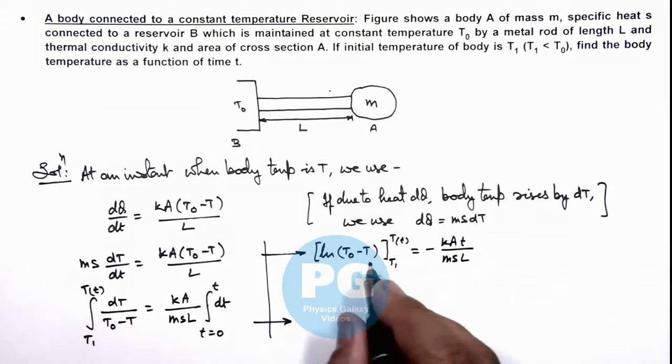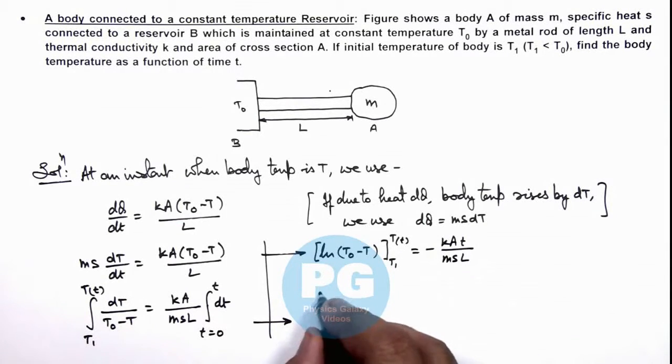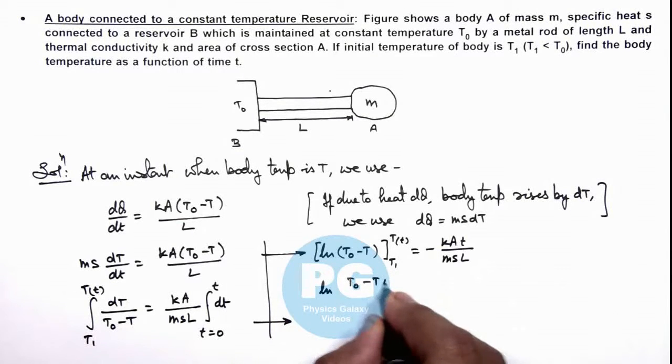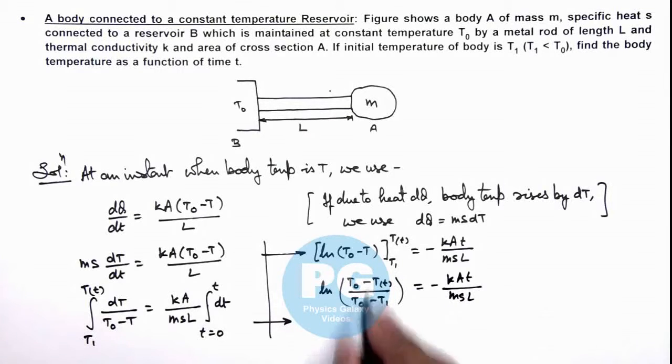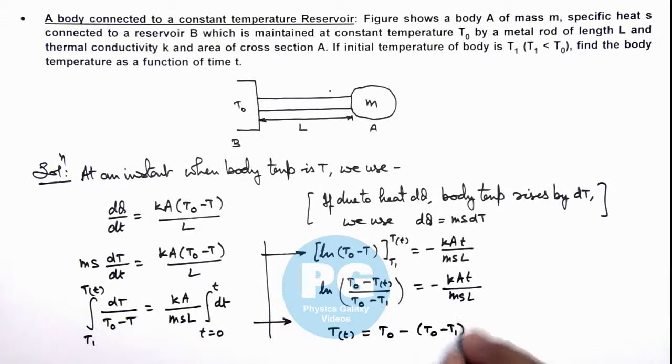Further rearranging these terms gives us ln of [(T₀ - T(t))/(T₀ - T₁)] is equal to minus kAt/(msL). On simplifying this term we'll get the value of temperature as a function of time is T₀ minus (T₀ - T₁) multiplied by e to power minus kAt/(msL). That is the result of this problem.